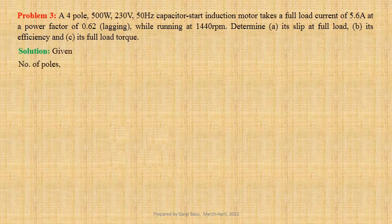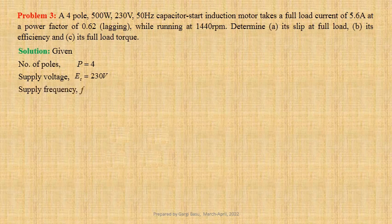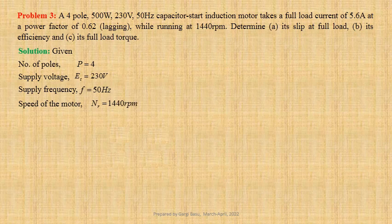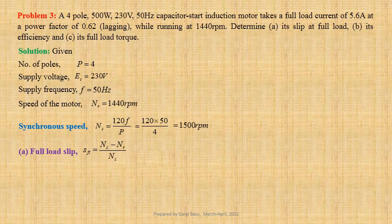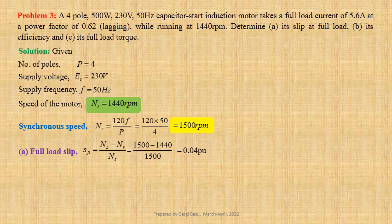Number of poles of the machine P equals to 4. Supply voltage Et equals to 230 volts. Supply frequency F equals to 50 hertz. Speed of the motor Nr equals to 1440 revolutions per minute. Let us now calculate synchronous speed. Ns equals to 120F by P. Using values we get 120 into 50 divided by 4, that gives us 1500 revolutions per minute. Full load slip SFL equals to Ns minus Nr divided by Ns. Using values we get 1500 minus 1440 divided by 1500, that gives us 0.04 per unit or 4%.